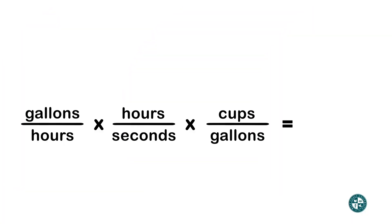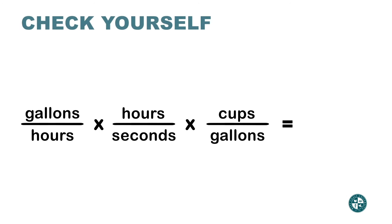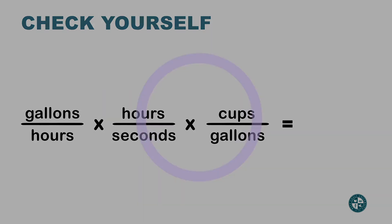Now it's your turn to check your understanding of applying cross cancellation with words when you're multiplying rates. Hit the pause button, work it out, and when you have your answer, hit the play button and check yourself.